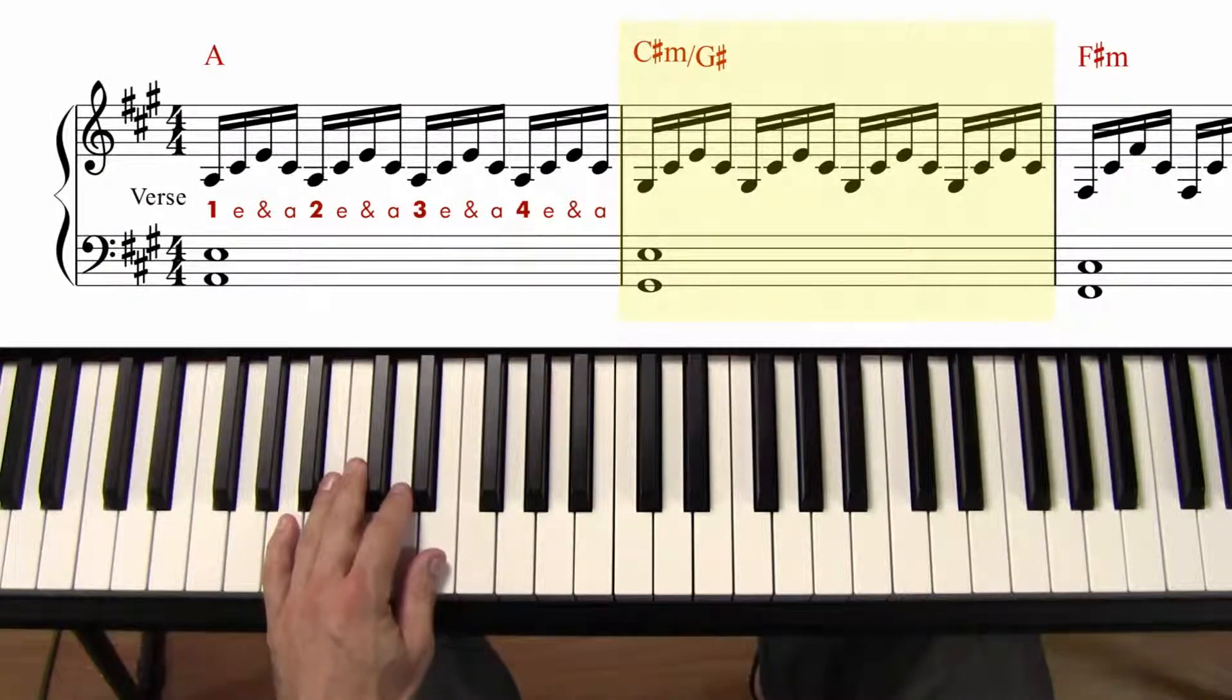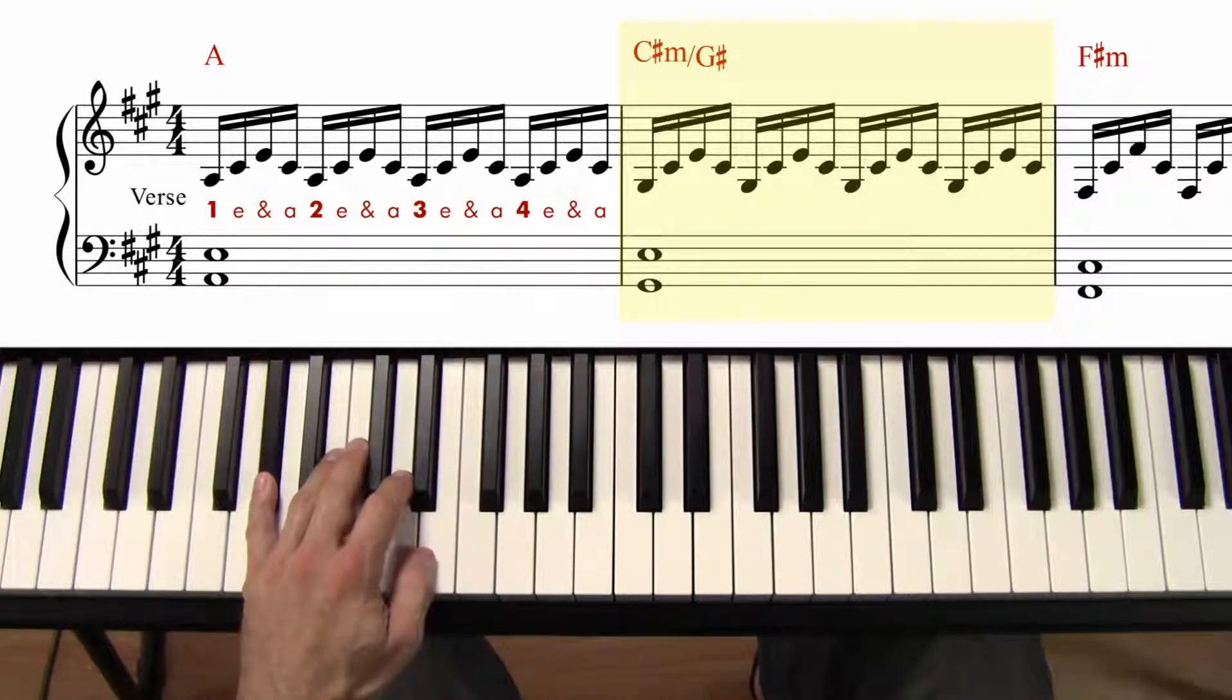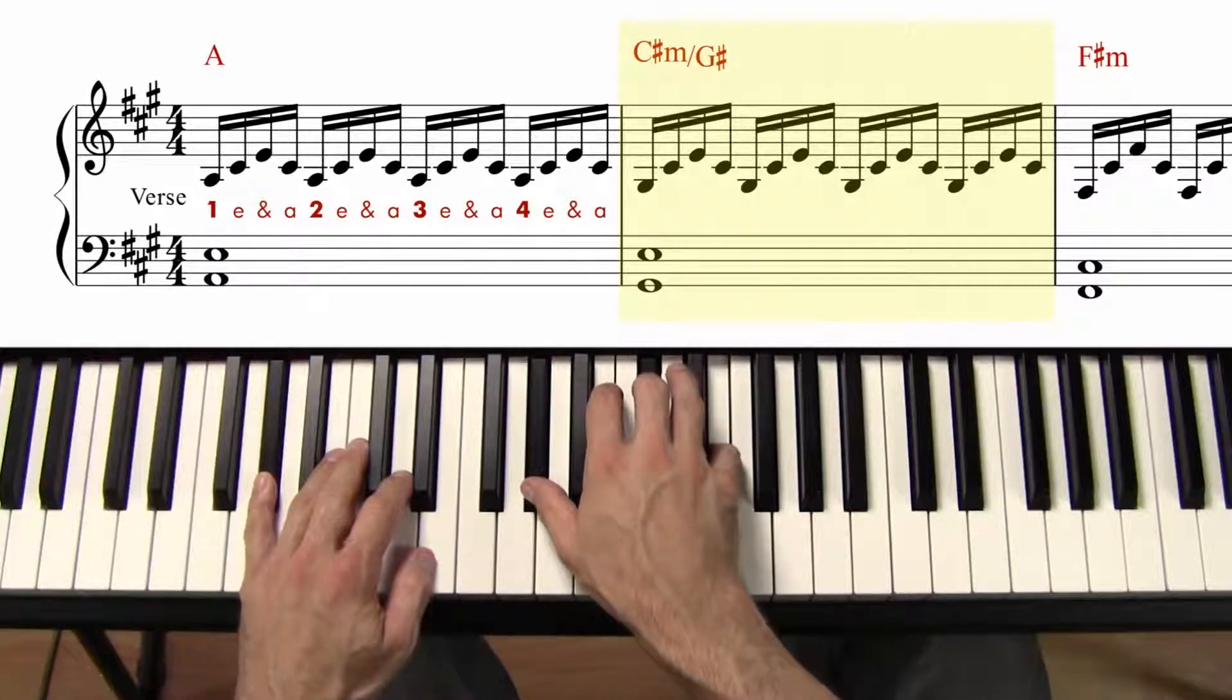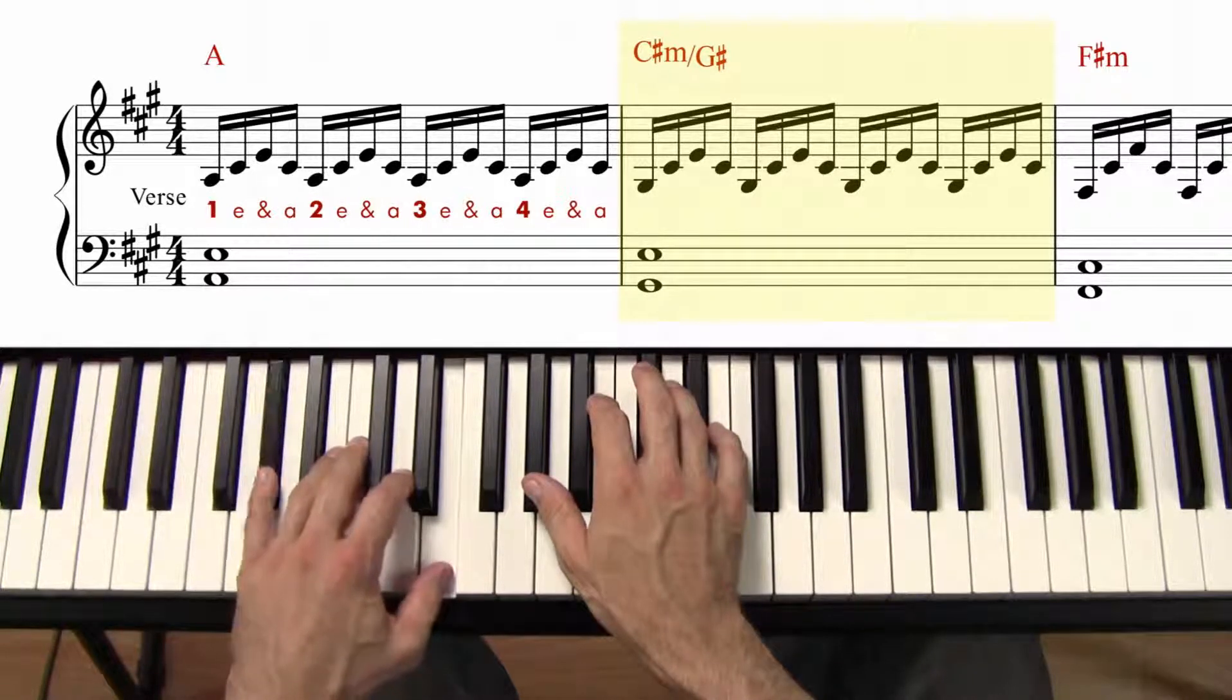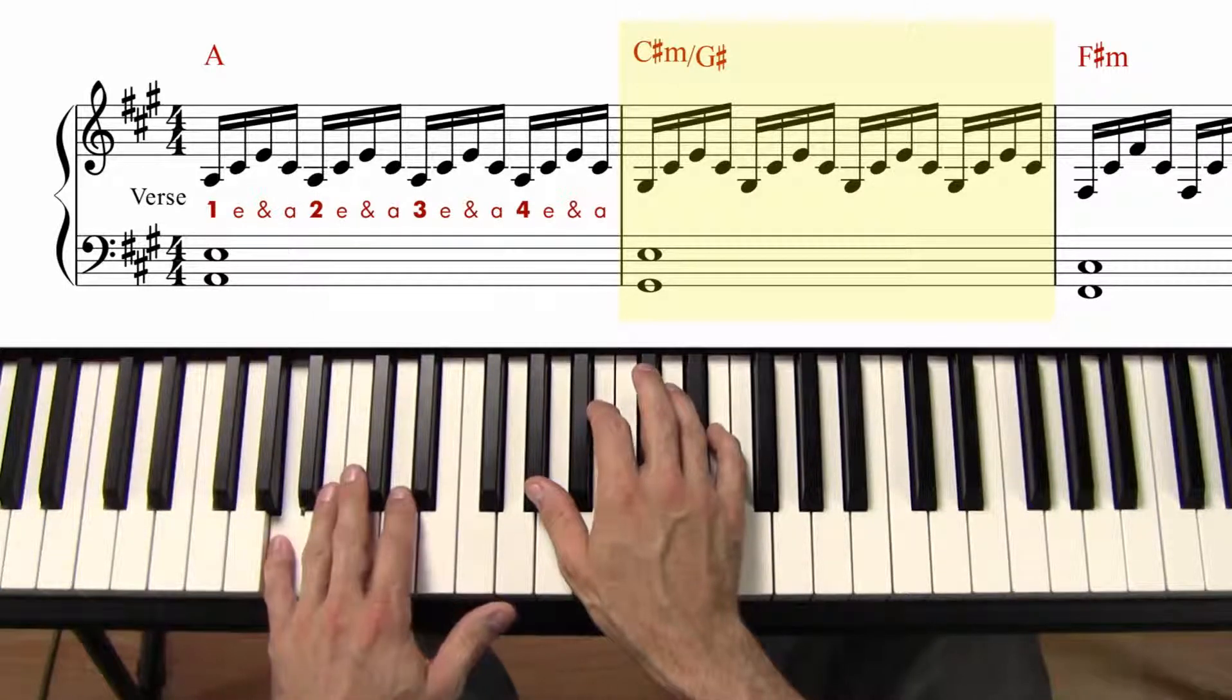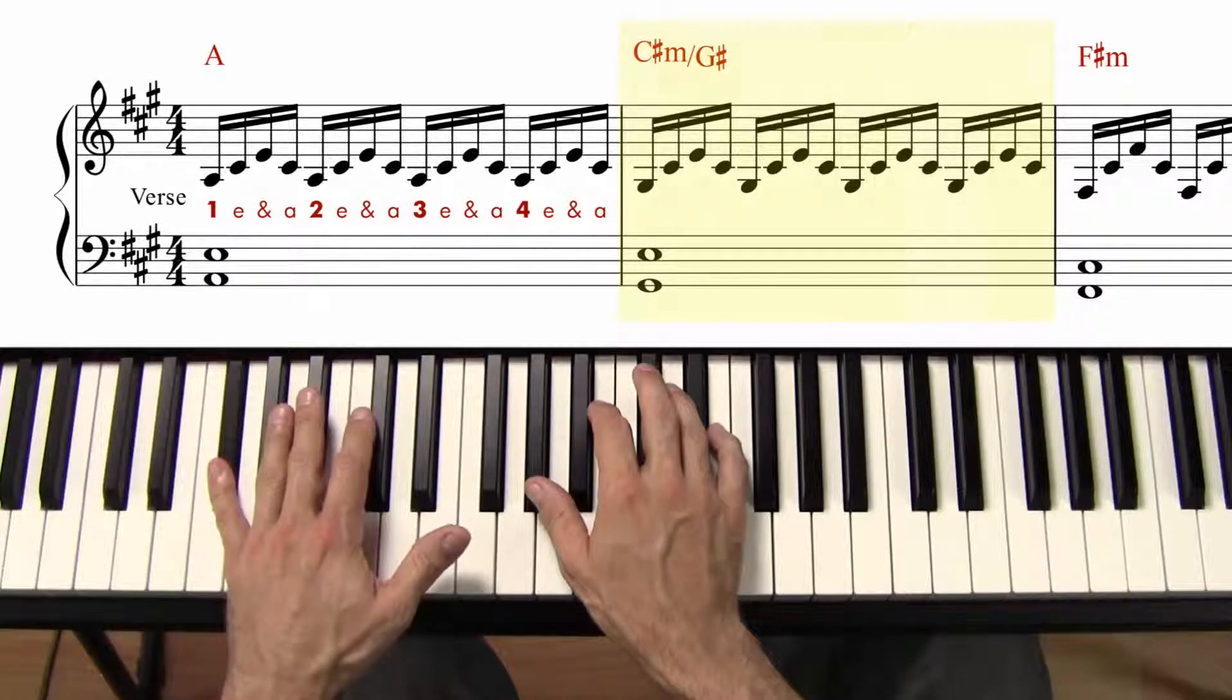just to go over what a slash chord means. Here we see a C sharp minor slash G sharp. What that slash G sharp means is that G sharp is going to be the lowest note. The chord we have in our right hand is a C sharp minor above the bass note. But that bass note, that slash note, is what they're asking for us to put as the lowest note. In this case, our pinky. And that's what gives it that really nice sound. A, the bass line, G sharp, and then F sharp.